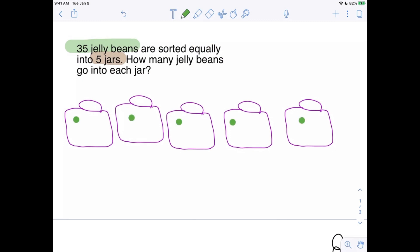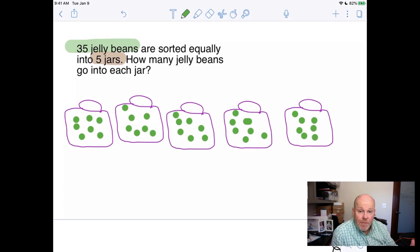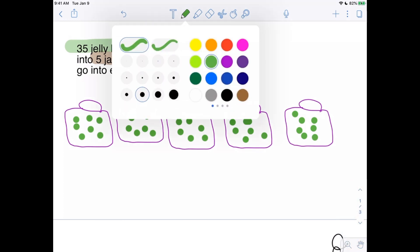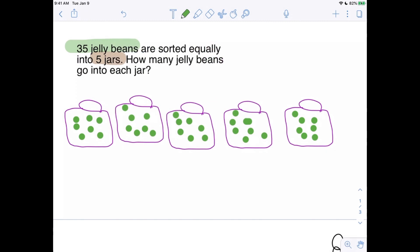All right. So one, two, three, four, five, six, seven, eight, nine, ten, eleven, twelve, thirteen, fourteen, fifteen, sixteen, seventeen, eighteen, nineteen, twenty, twenty-one, twenty-two, twenty-three, twenty-four, twenty-five, twenty-six, twenty-seven, twenty-eight, twenty-nine, thirty, and then thirty-one, thirty-two, thirty-three, thirty-four, thirty-five. Now, because I reached 35, I'm done passing them out. So now we know the answer. All we have to do is look at our picture and our picture says that 35 divided by five equals, and then all we have to do is count how many jelly beans are in each jar. And we can see that each jar has seven jelly beans.